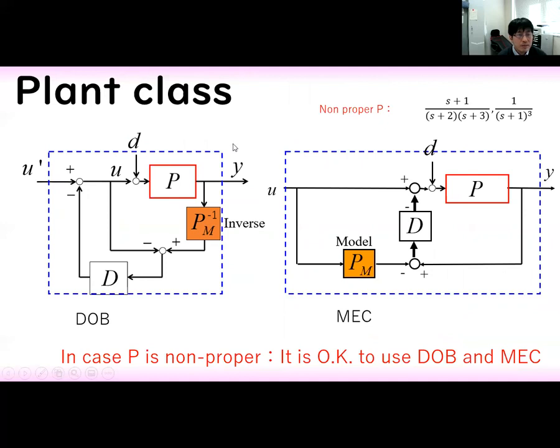We introduce the plant class in this slide. In case the plant is given by non-proper transfer function like this, the compensator works well for both cases, disturbance observer and MEC.